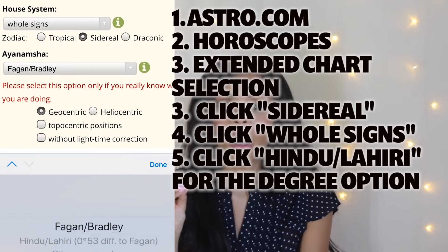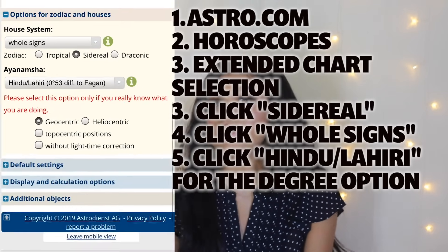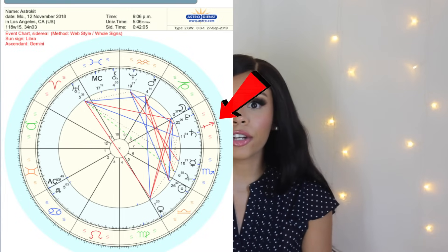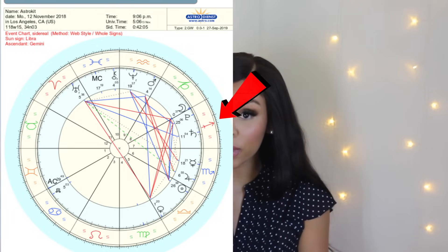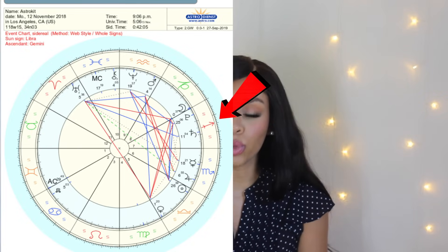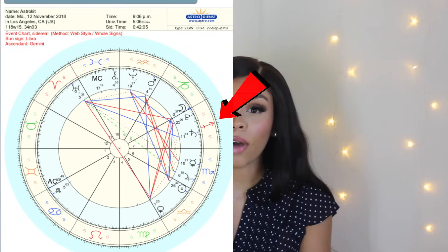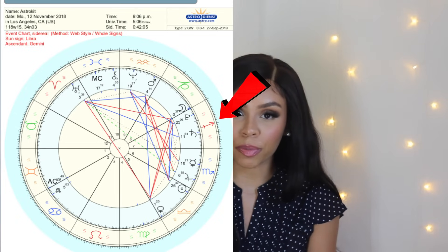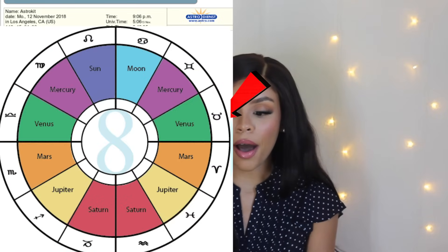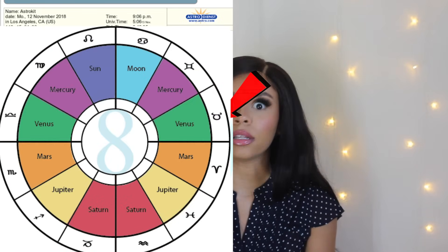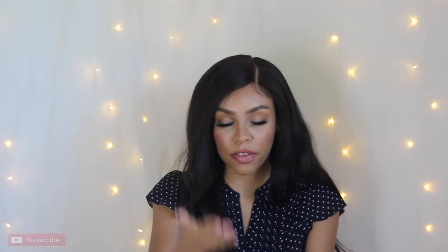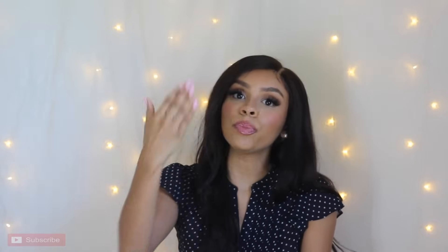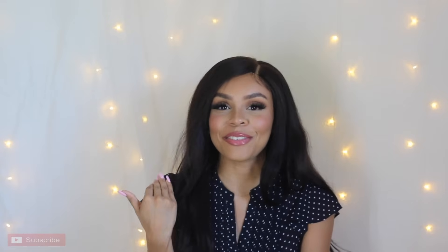Once you have your sidereal birth chart — remember, we're using the sidereal chart, not the Western tropical chart — you want to look at your seventh house. Specifically, look at the sign your seventh house is in, and even more specifically, look at the seventh house ruler. The seventh house ruler is the planet that rules the sign of your seventh house. I'll put a picture of the rulerships on screen. For example, Scorpio seventh house means Mars is your ruler; Pisces means Jupiter; Capricorn means Saturn.